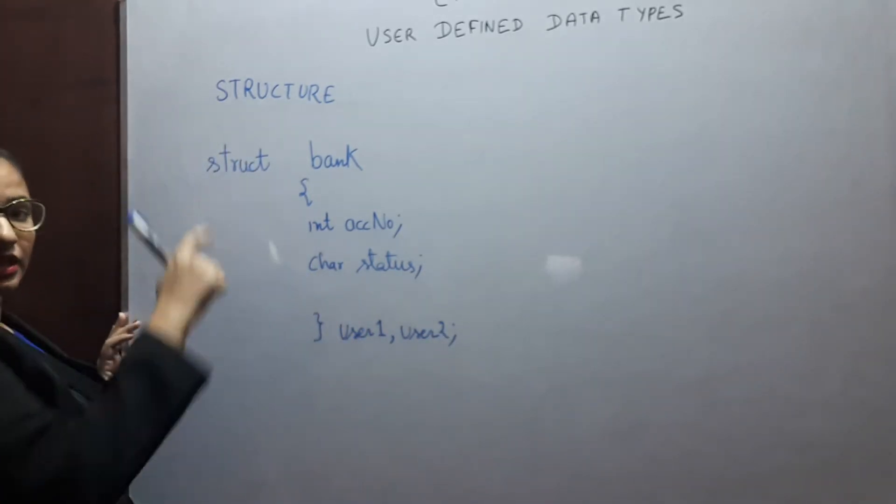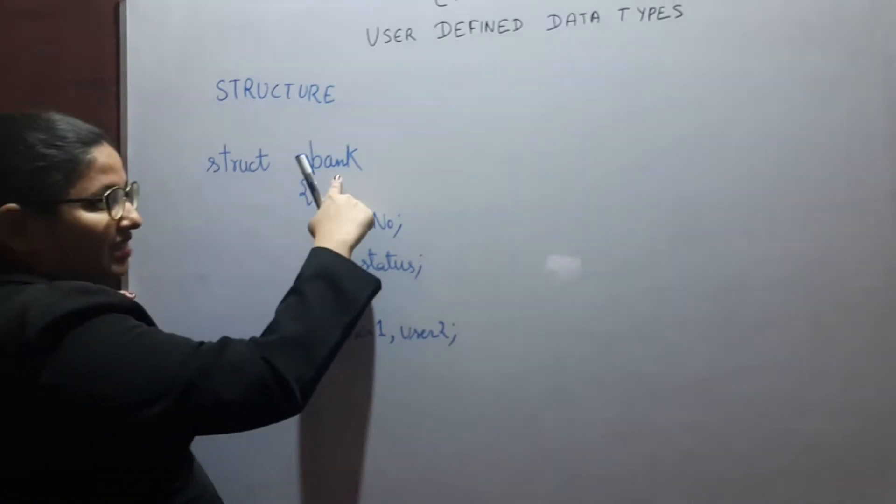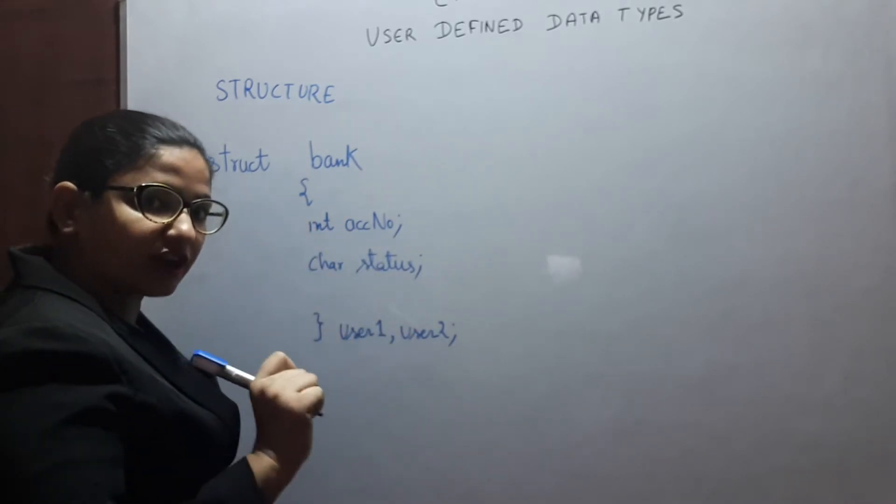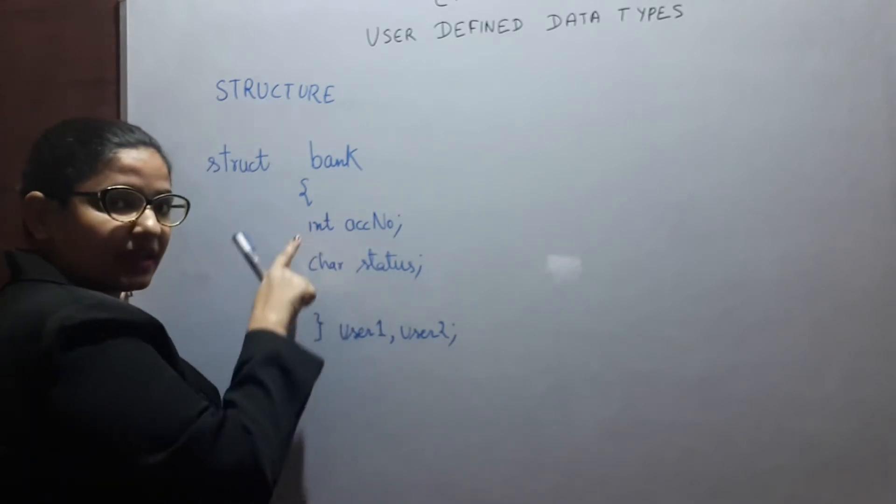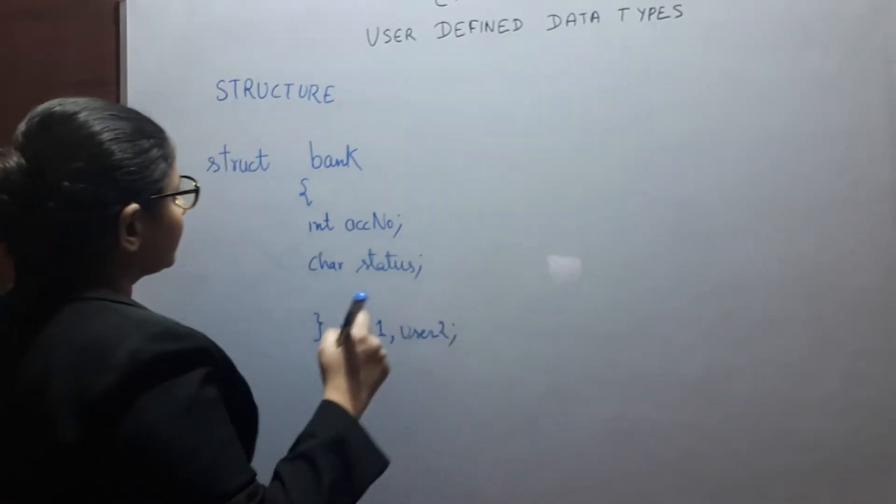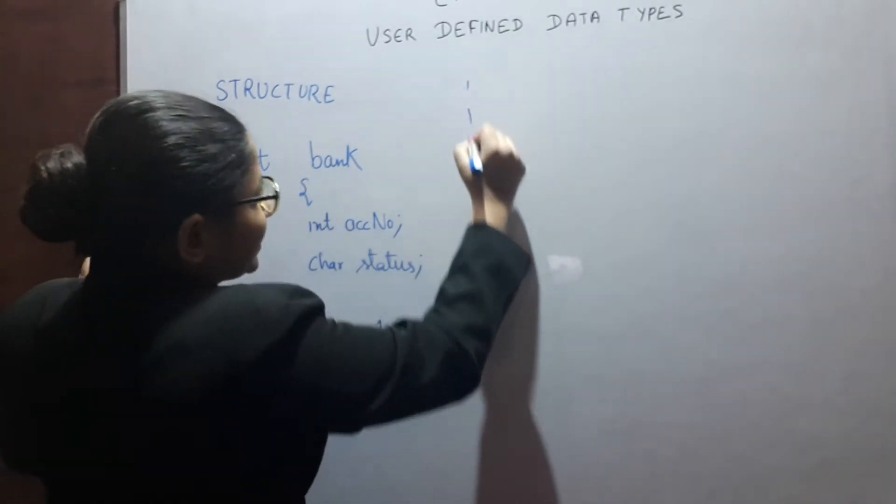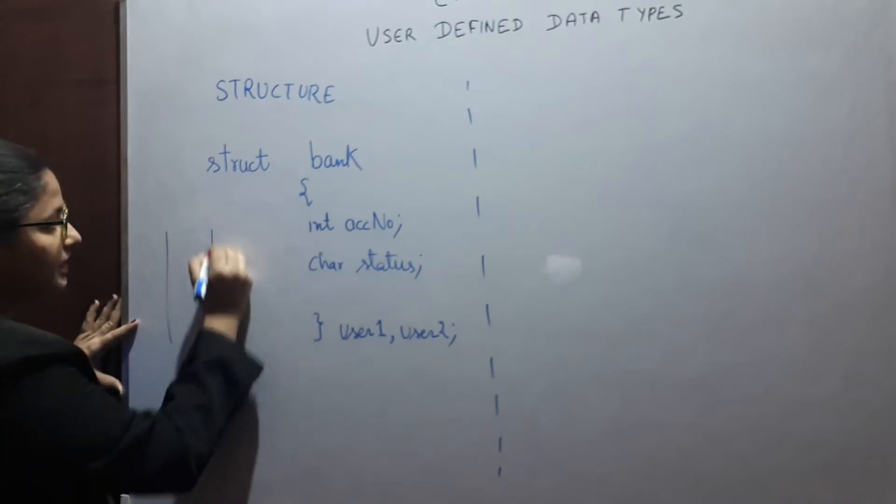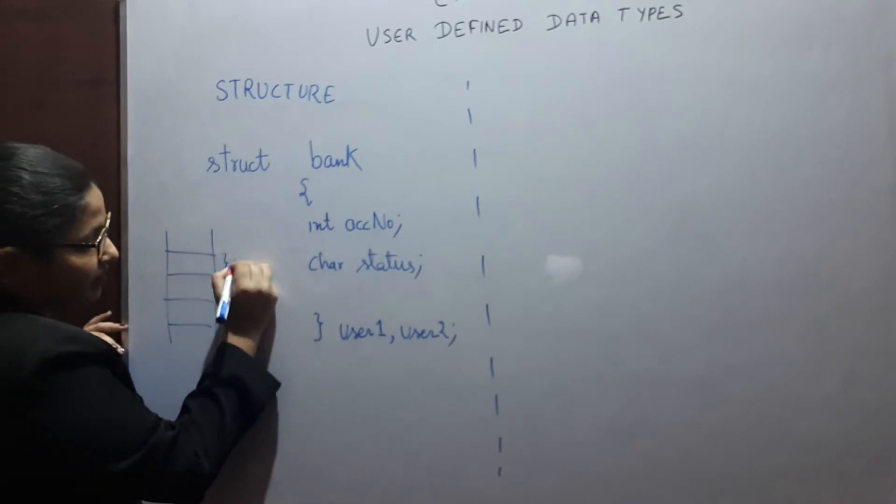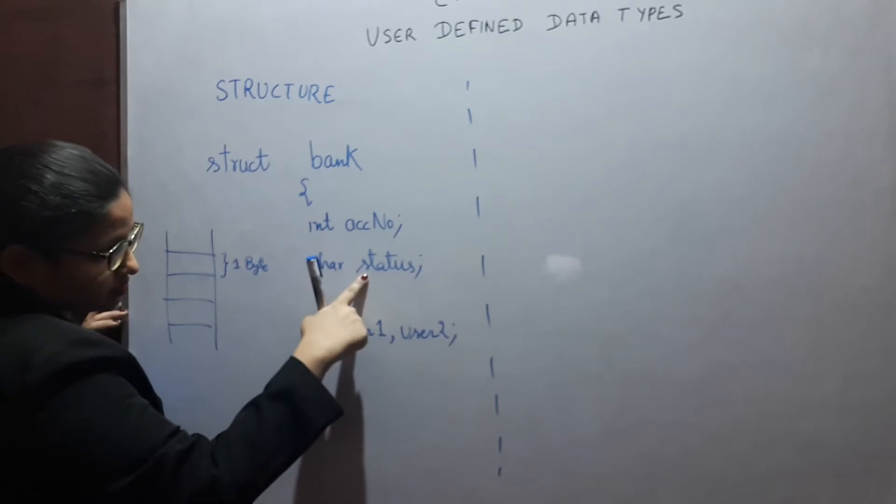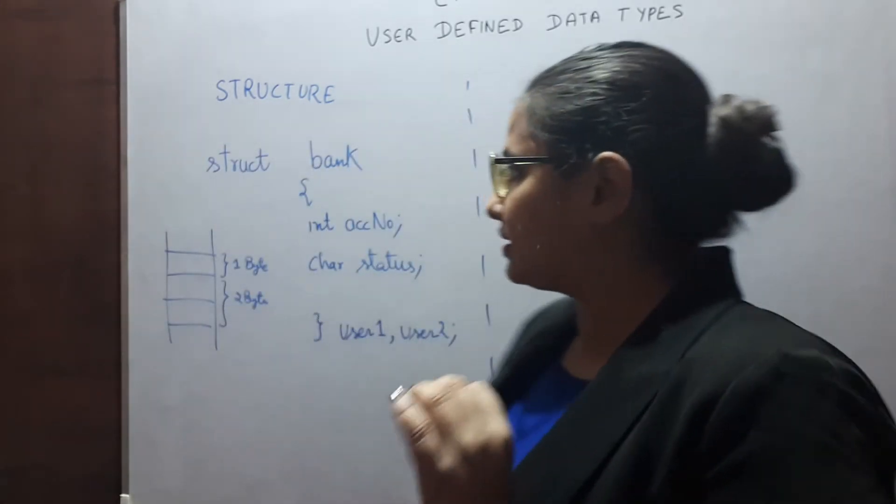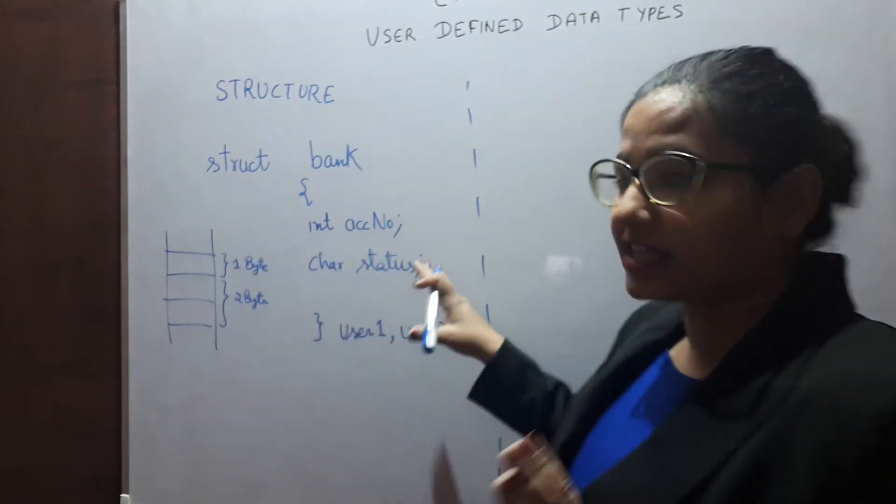With struct keyword, you are creating a structure. Bank is the name of structure. And curly bracket opening and closing contains definition of this structure. We are having one integer and one character. User1, user2 are the variable names of this structure. In a structure, we have one byte for status and two bytes for account number. It's packing together different data types. Next, we see union.